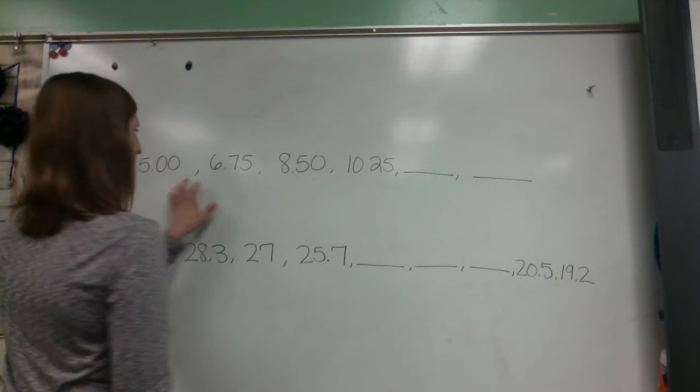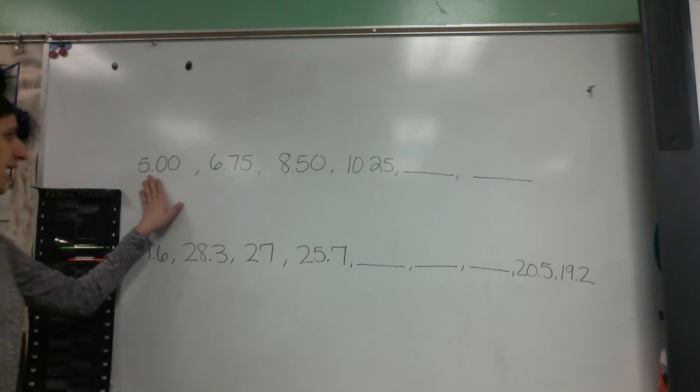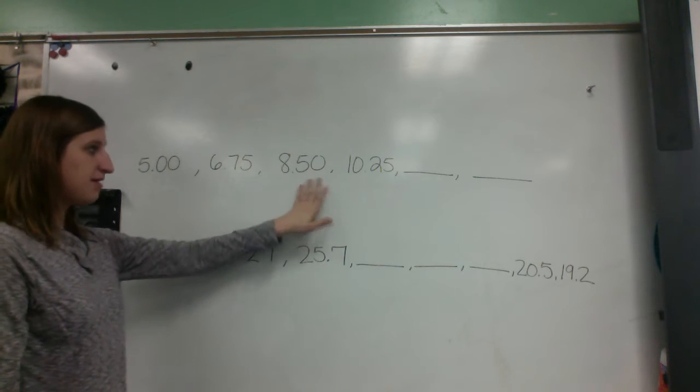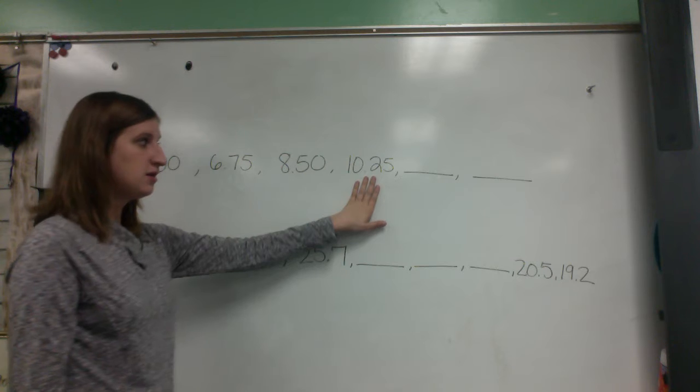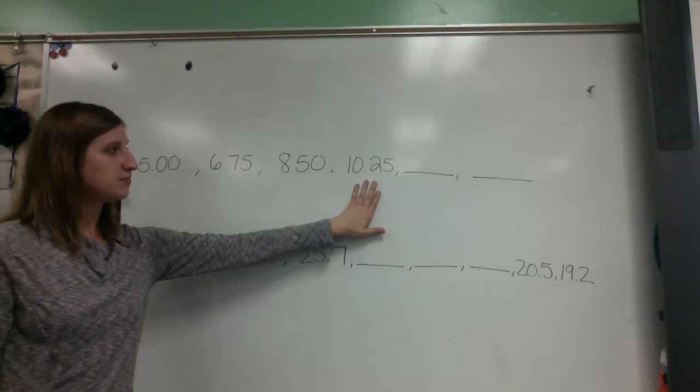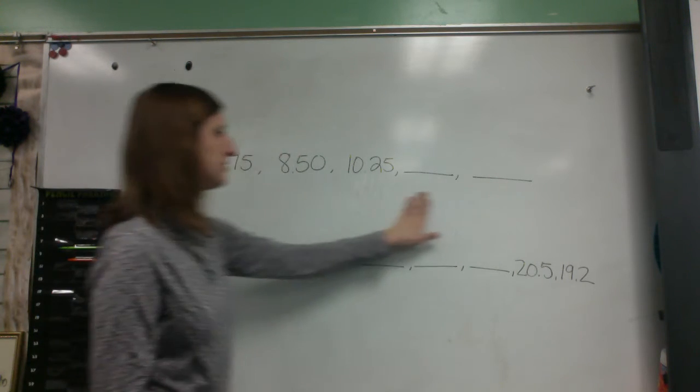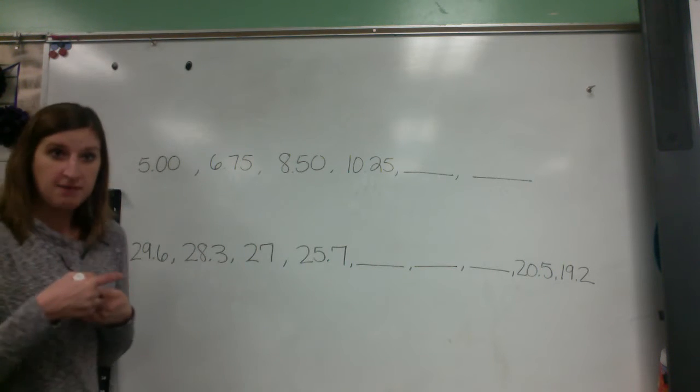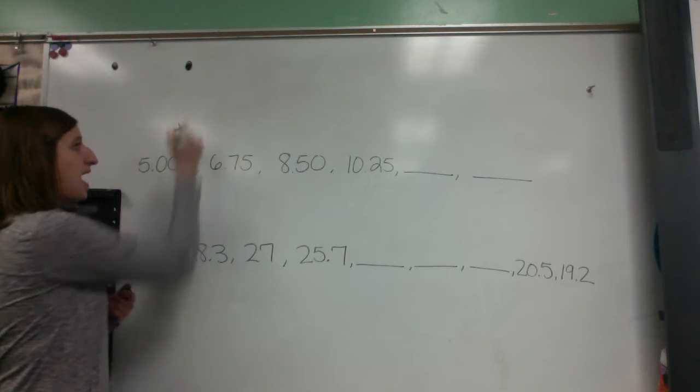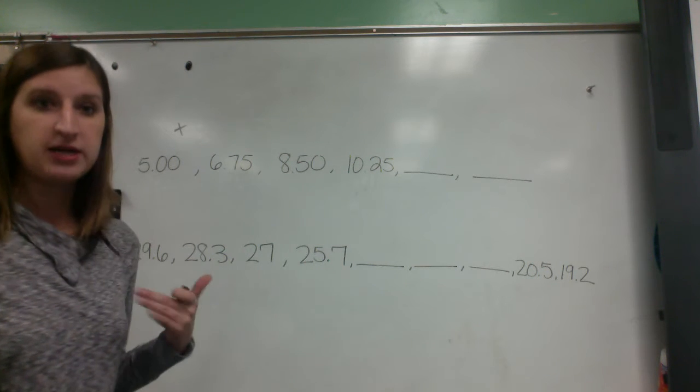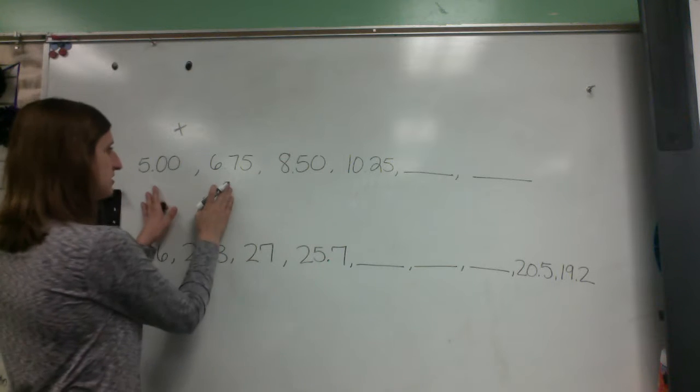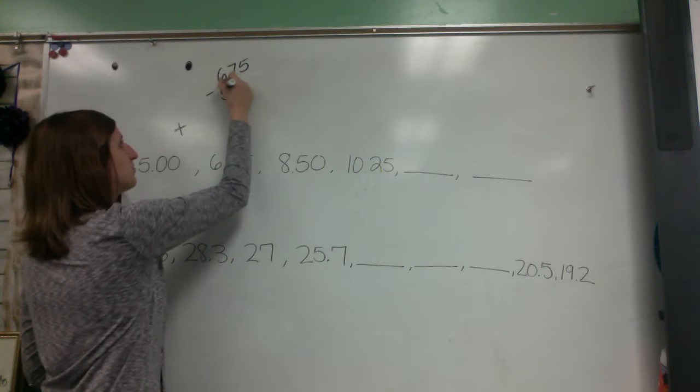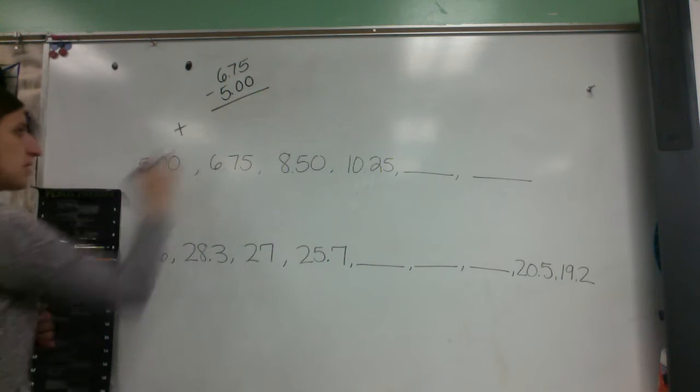Let's look at the first data set here. So I have 5.00, then I'm going up to 6.75, I'm going up to 8.50, I'm going up to 10.25, and then I have some missing data sets. I have some missing terms. So I know I'm going up, so it's safe to say I'm adding something each time, but the something is what we need to figure out. So I'm going to set up a problem that might help me do that. So I'm going to do 6.75 and I'm going to subtract 5 to figure out how much I'm going up right here.